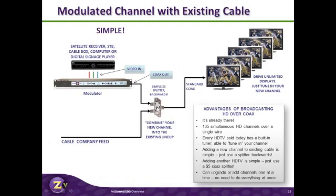In this case, we're using a simple $5 splitter backwards. A splitter and a combiner are the same device, just different labels. Using a splitter backwards, we've combined these organic channels along with our channel that we've just developed. And now all those channels, once again, live on the coax, and it's simply distributed to any number of TVs.